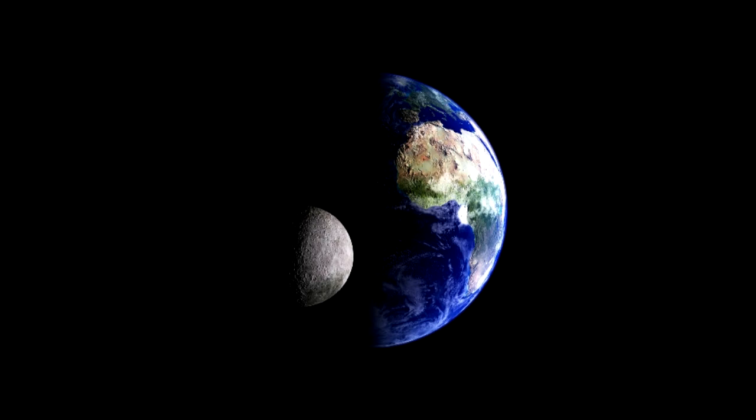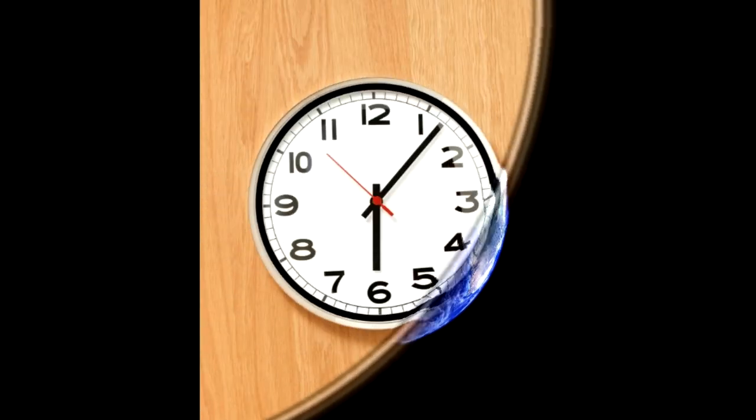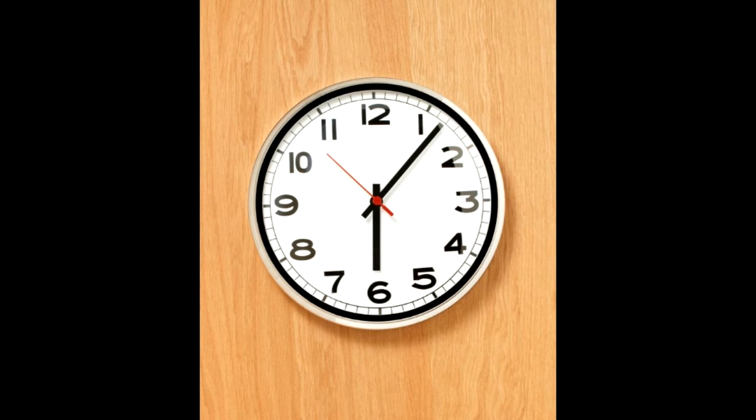Using this present-day rate, scientists extrapolating back through time calculated that beyond about 1.5 billion years ago, the Moon would have been close enough that its gravitational interactions with the Earth would have ripped the Moon apart, he explained.